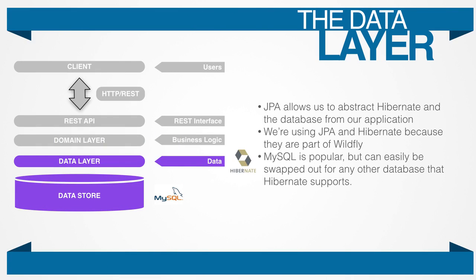Almost every useful web service application needs to read and store data. To make our lives easier, we're going to use the Java Persistence API. This is another specification, and the implementation we're going to use is called Hibernate. These were chosen because they come standard in WildFly. The data objects in our API represent our data as how the database represents it. So, finally, we need a database. We will use MySQL because it's free, easy to set up, and very popular. Since we're using JPA to abstract most of the database from our view, you could eventually swap out MySQL with any other database that Hibernate supports.